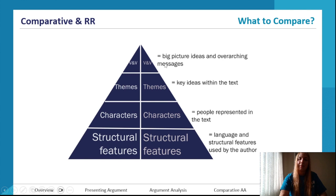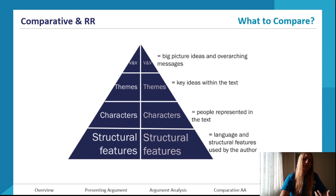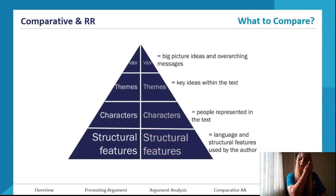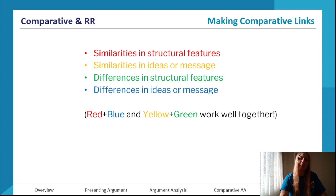What can you compare? There's a pyramid giving lots of ideas. Structural features are very obvious with lots of comparative links to make, though this is not as valuable. Characters are often given to compare with each other — they may represent similar values but have certain differences in personality. Themes and views and values are more difficult but more valuable: themes are likely similar but represented slightly differently, and the big-picture ideas — what is the author trying to say — may differ between the two texts.